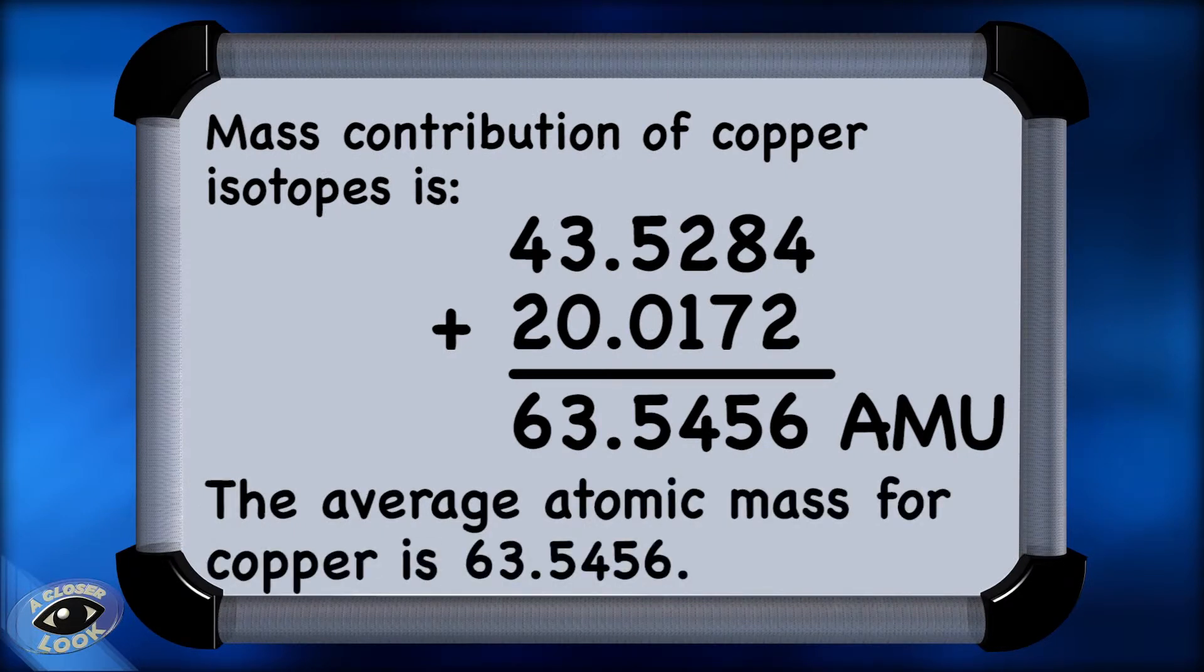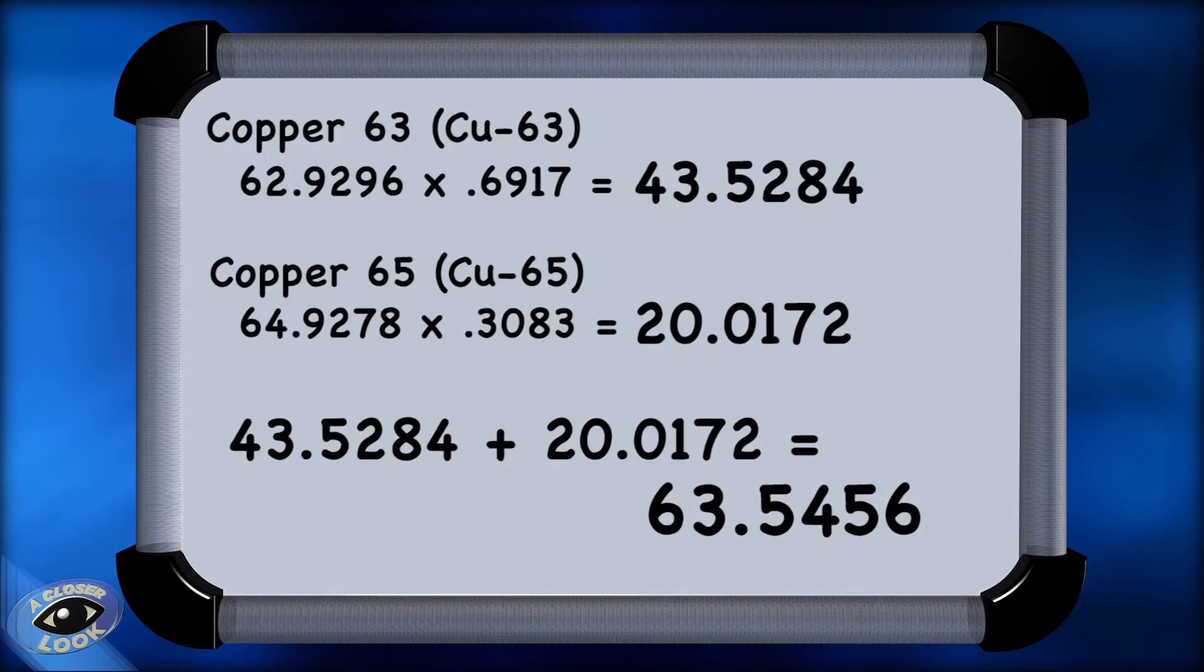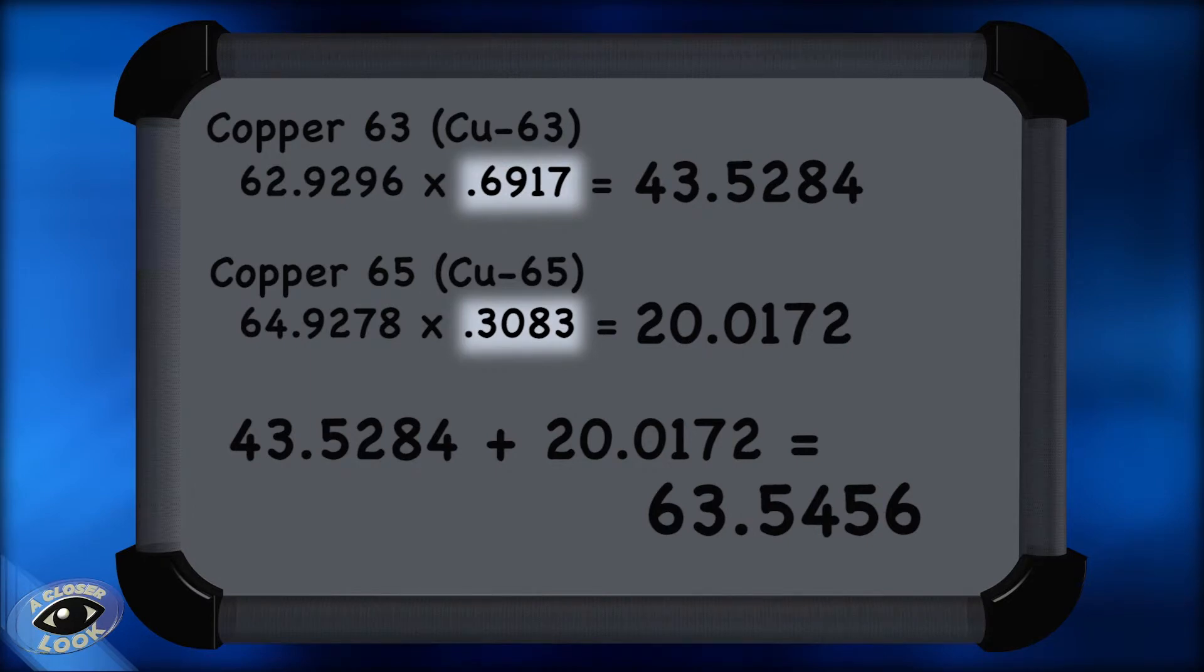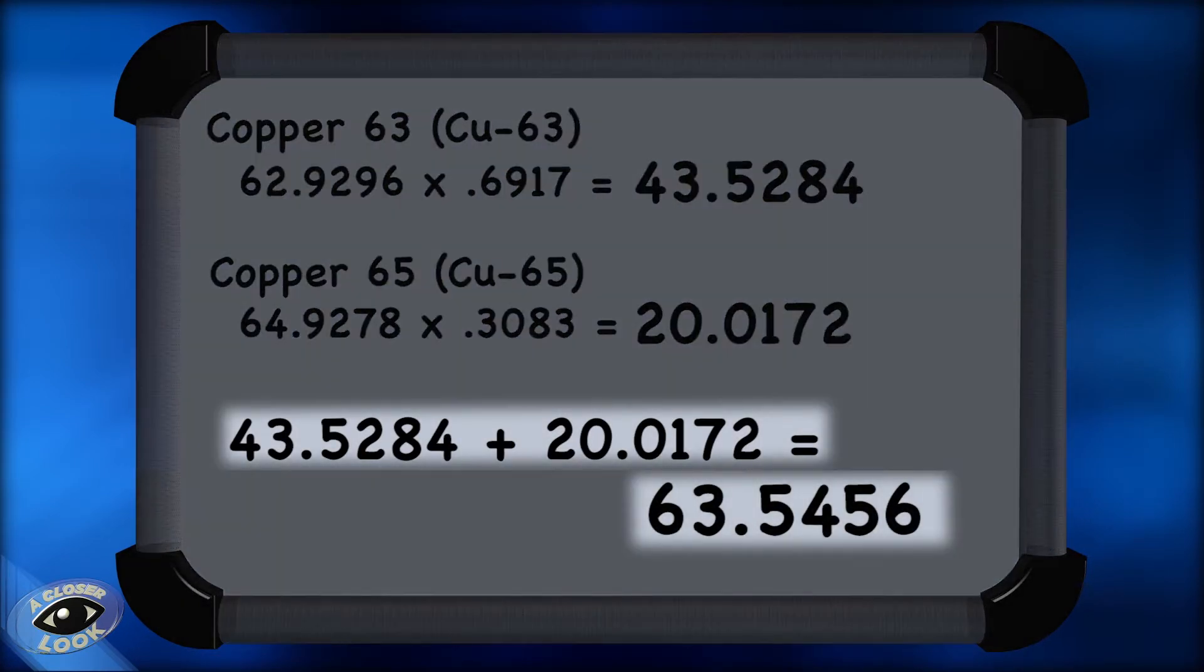To recap, this comes from the sum in the equation. So for both isotopes, we took the mass of those isotopes times the abundance in decimal form, and then we added those two values together.